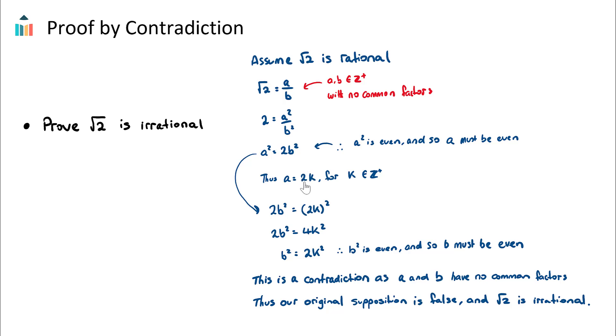So a can be expressed as 2k, and what we can therefore do is rewrite this one here and say well 2b² = a², and I'm going to replace a with 2k because I know that a is an even number. So therefore this becomes 4k².